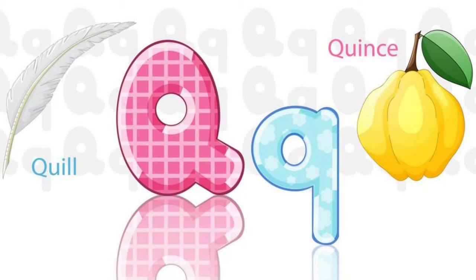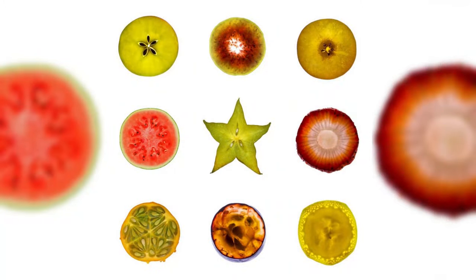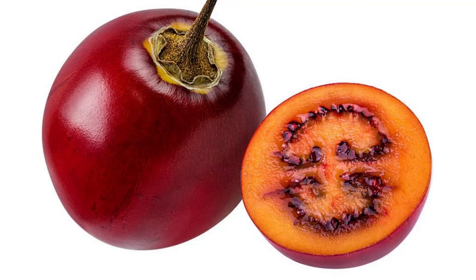Q is for quondon. R is for rambutin. S is for star fruit. T is for tamarillo.